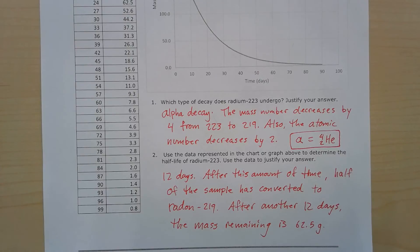because the mass number decreases by four from 223 to 219, and also the atomic number decreases by two, which is exactly the amount of an alpha particle, which is the helium nucleus, right? So remember, helium has an atomic number of two and a mass of four.